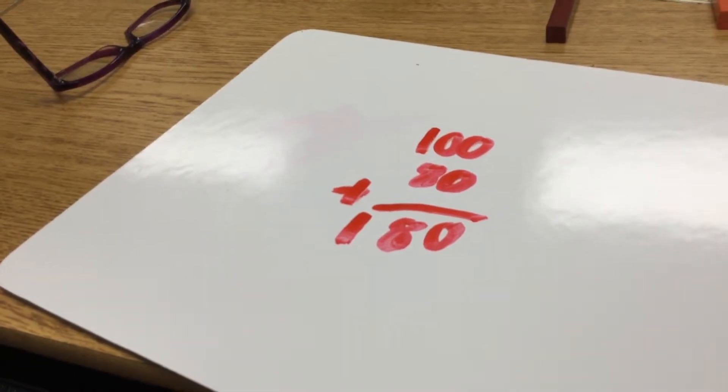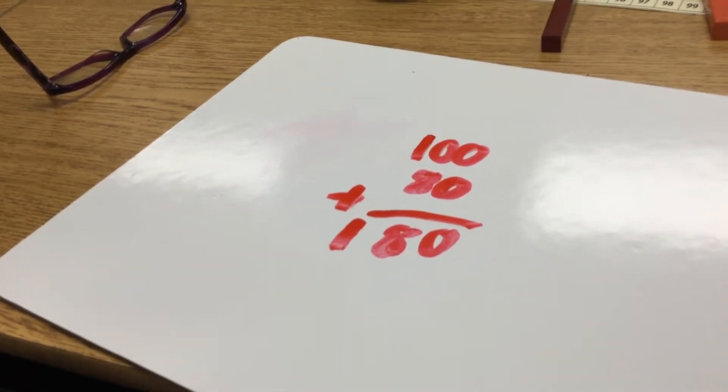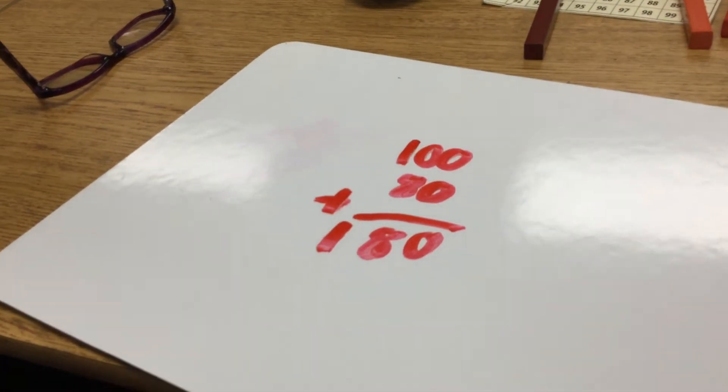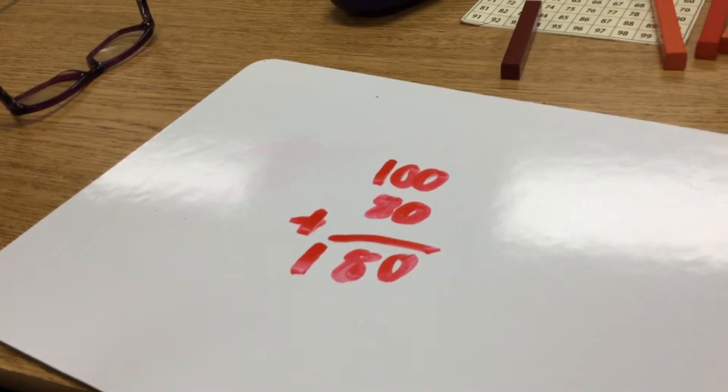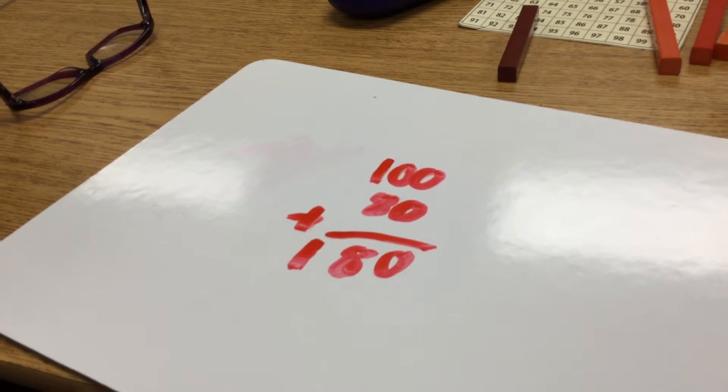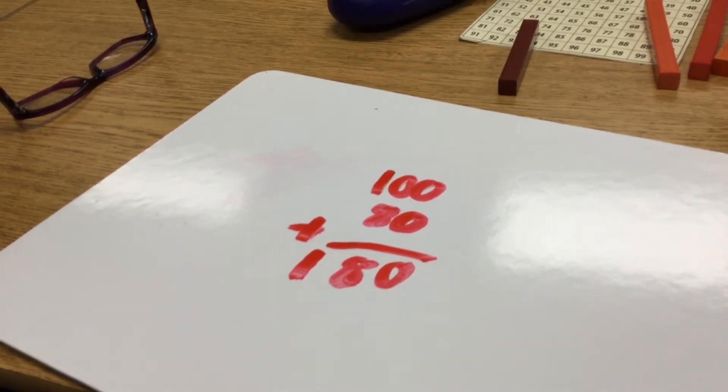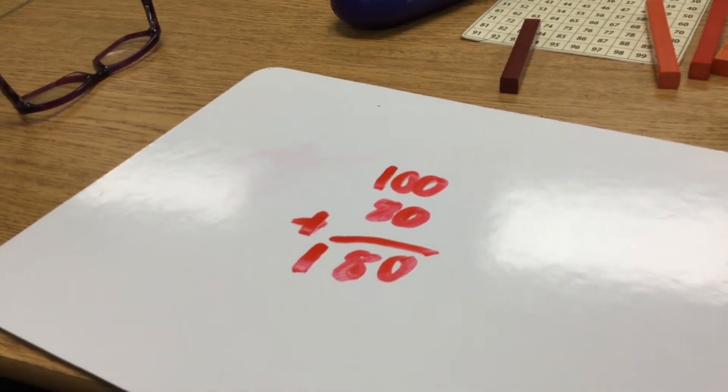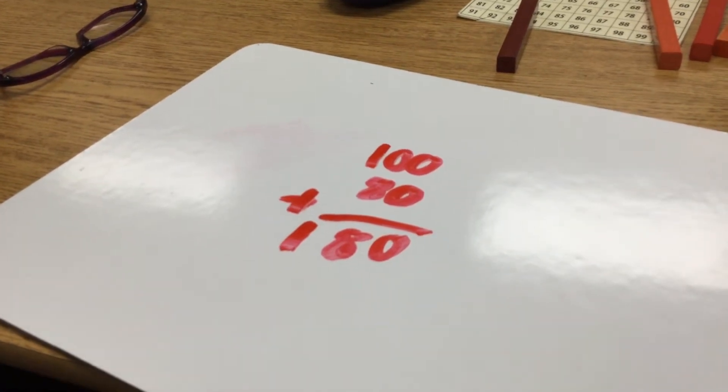What about if you had 100 plus 70? 100 plus 70. It would be 170. Very good. So you wouldn't have to add the 0s first and then the 7 plus the 0 because you just know it? Mm-hmm.